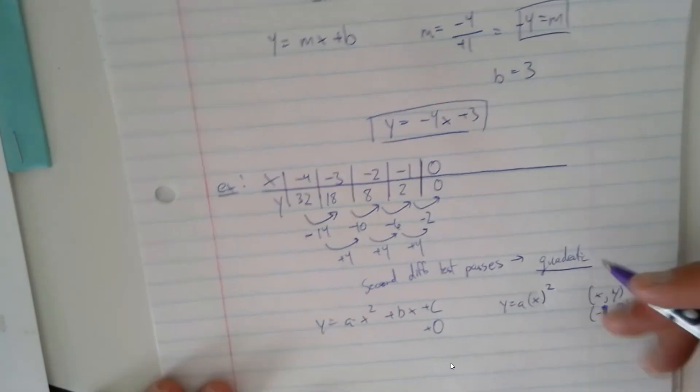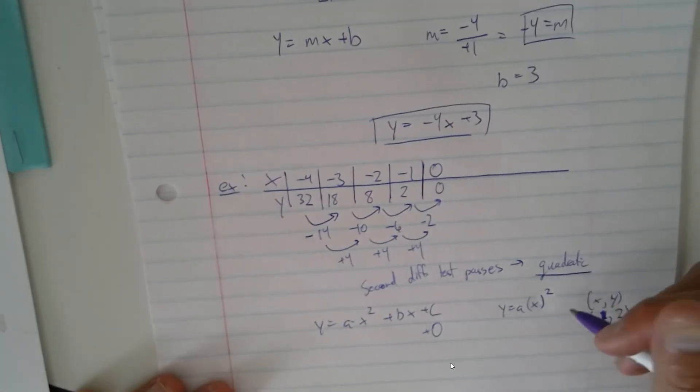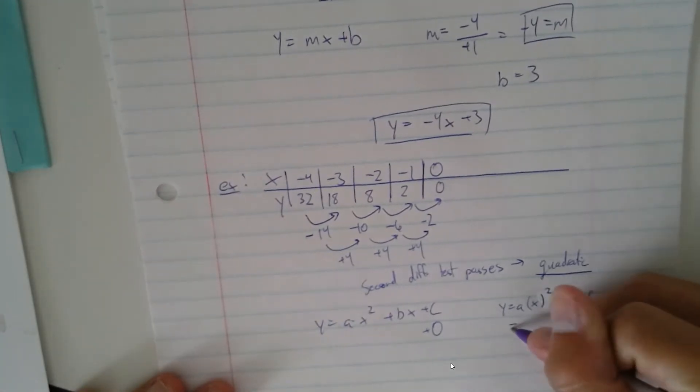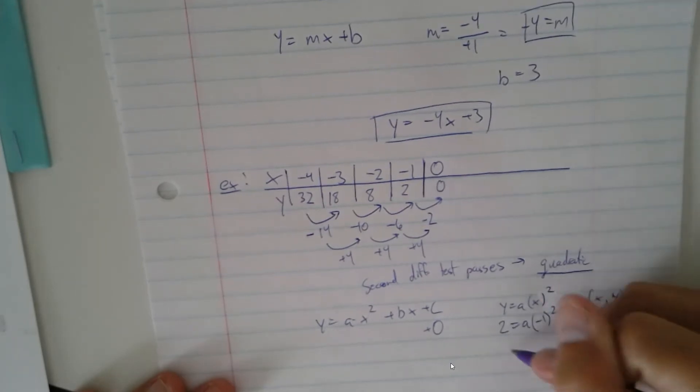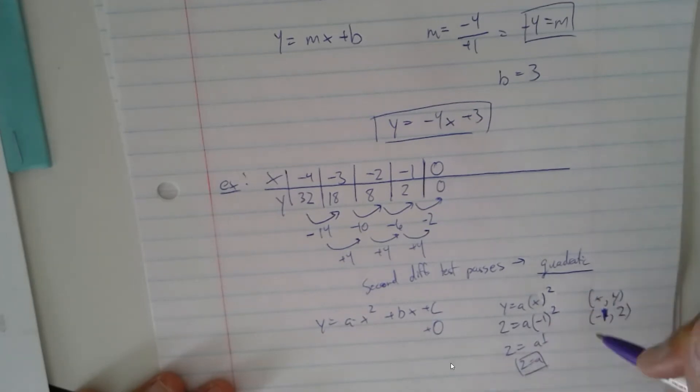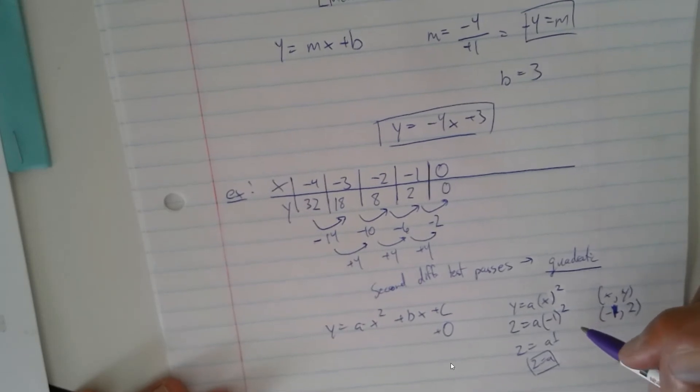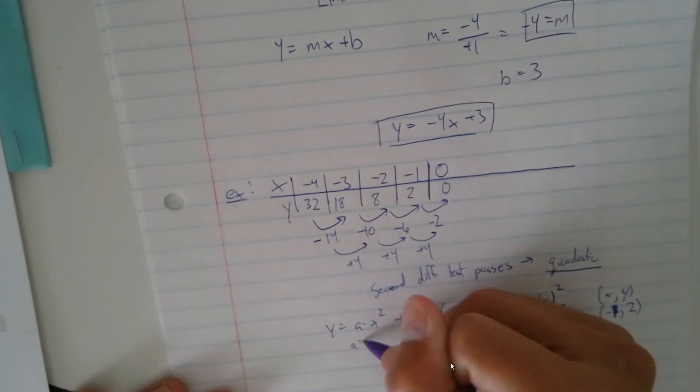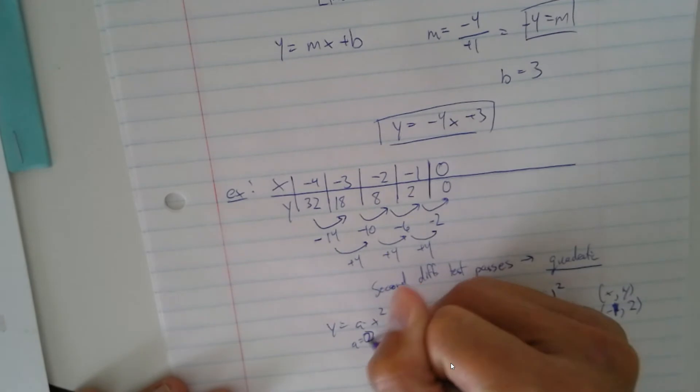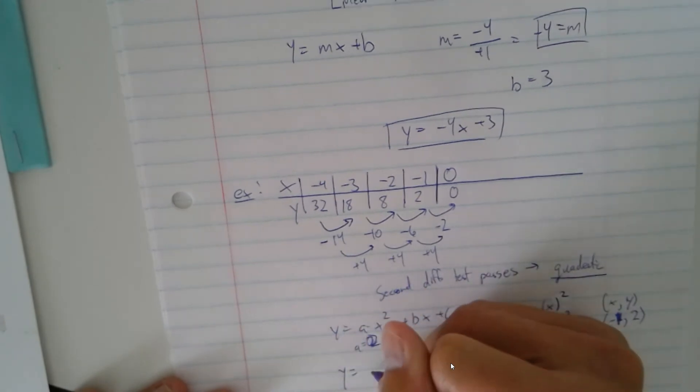So it's going to be ax squared. You're going to put in, in place of x squared, it's going to be negative 1 squared, and then y is going to be 2. So you're going to have 2 equals a times 1, so 2 equals a. So a is now going to be equal to 2. Your final equation should be y equals 2x squared.